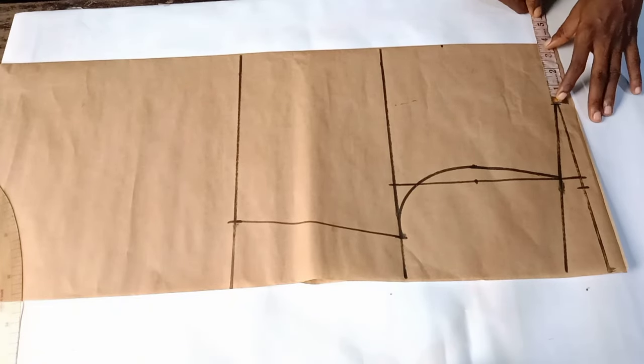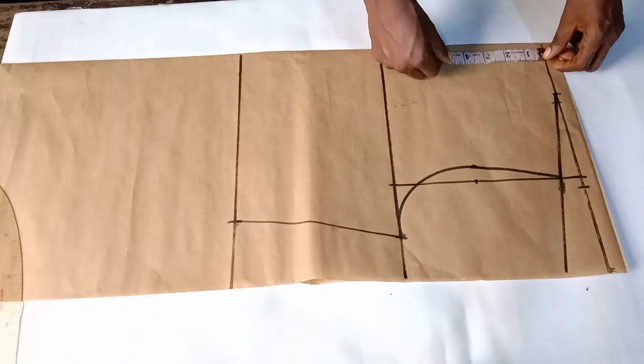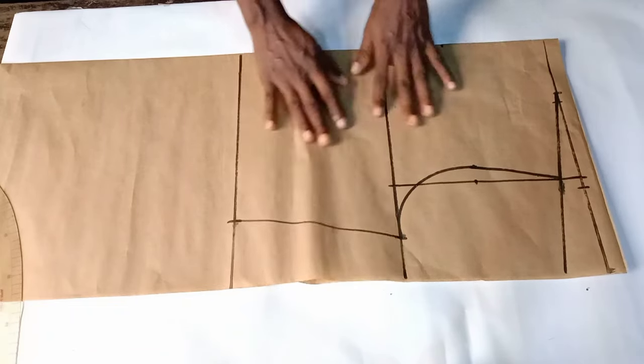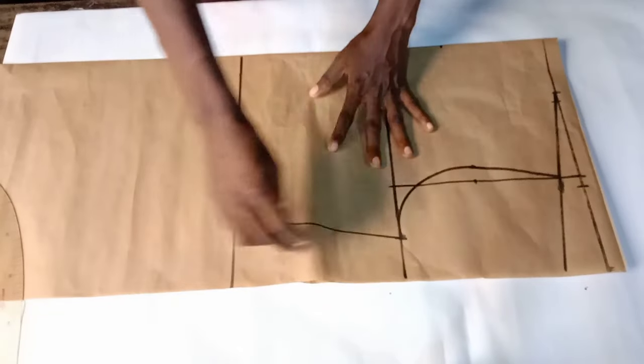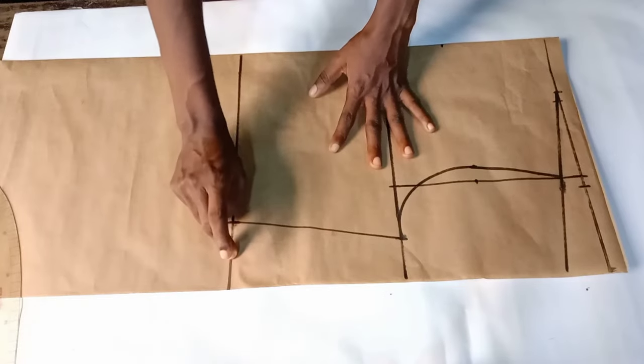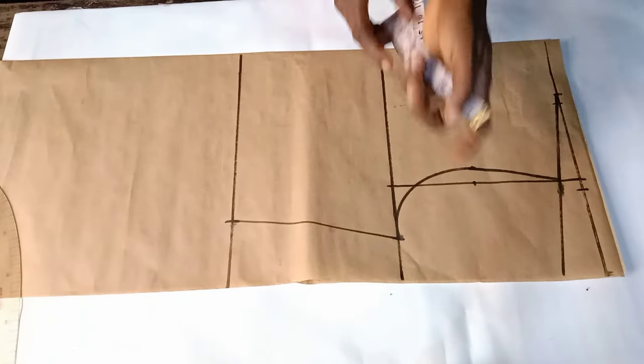I'm working with a neck width of three and a half inches and a neck depth of five inches. So before I go on, I'll have to add one inch allowance to this side, that is to the bust and the waist measurements, which is what I'll do now.